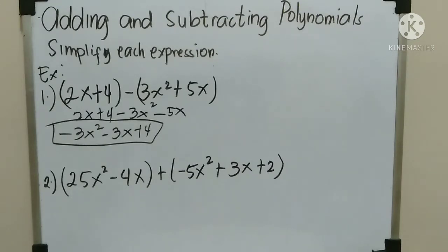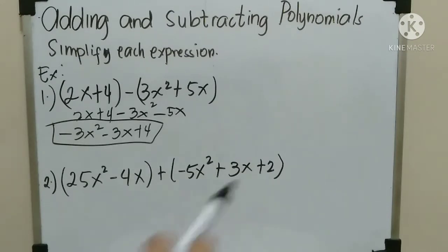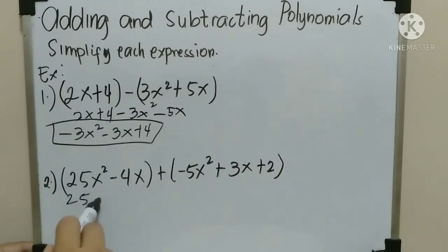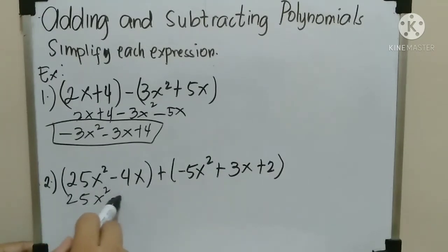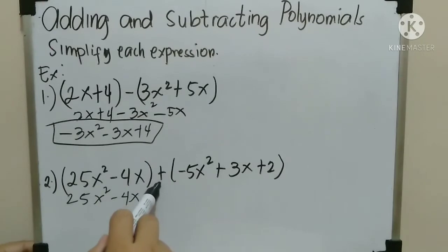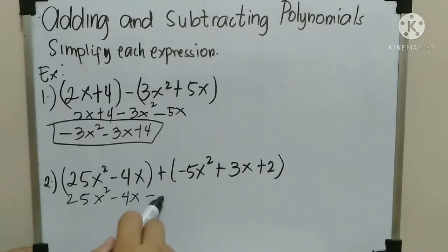Okay, next. Number 2. We have (25x² minus 4x) plus (negative 5x² plus 3x plus 2). Copy 25x² minus 4x. Then multiply: positive times negative 5x squared — that is negative 5x squared.